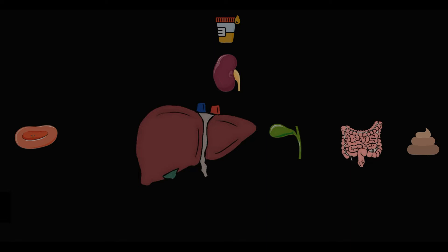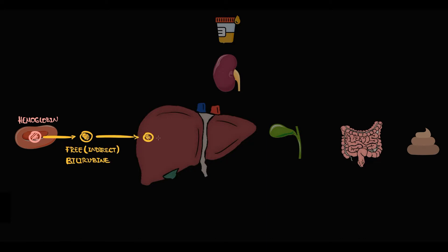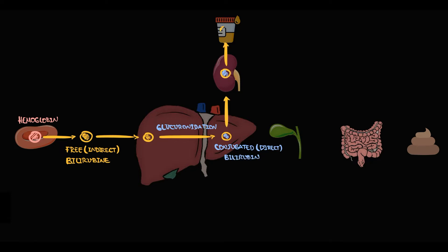Hemoglobin is contained inside the red blood cells. Once hemoglobin is released into the blood, it becomes free bilirubin. Then the liver uptakes free bilirubin and converts it by glucuronidation into conjugated bilirubin. Part of conjugated bilirubin is excreted by the kidneys into the urine; another part is secreted into the bile and then excreted by the intestine into the feces.